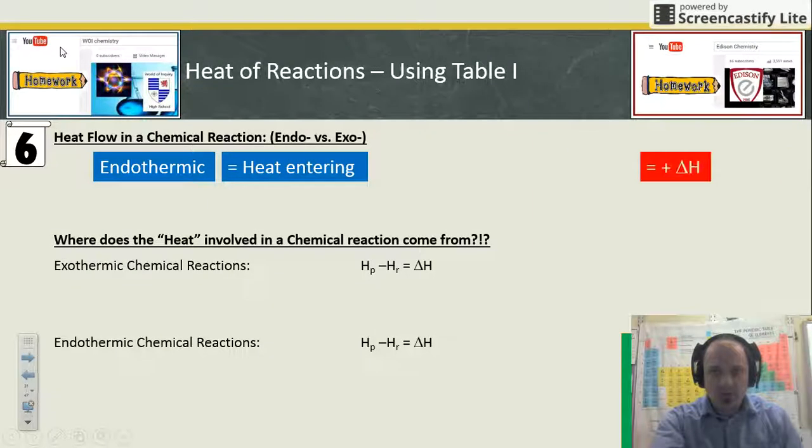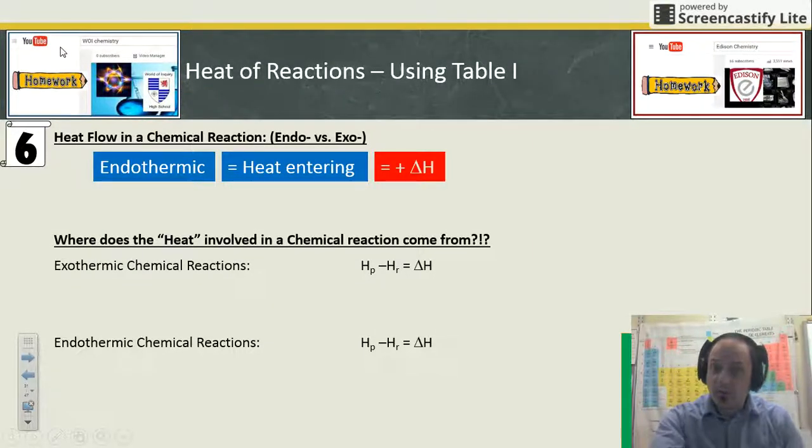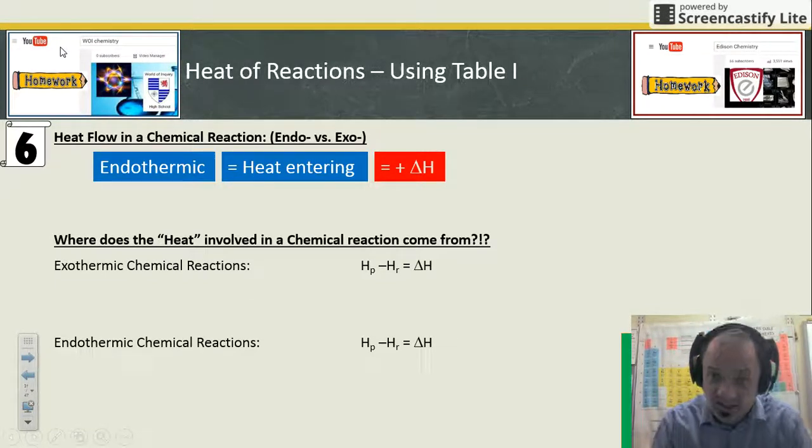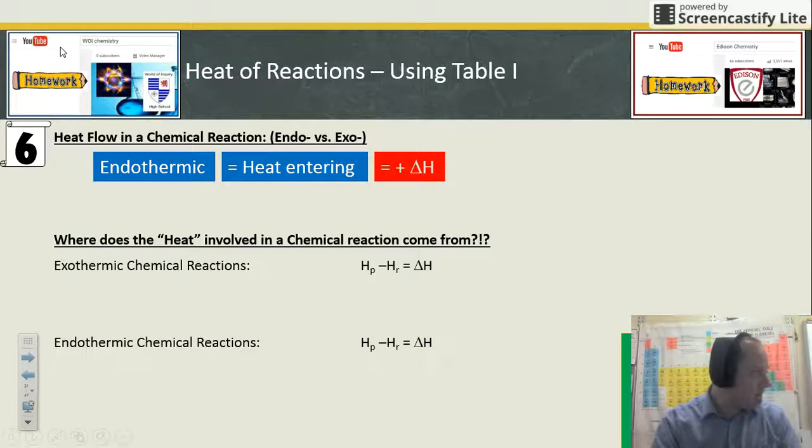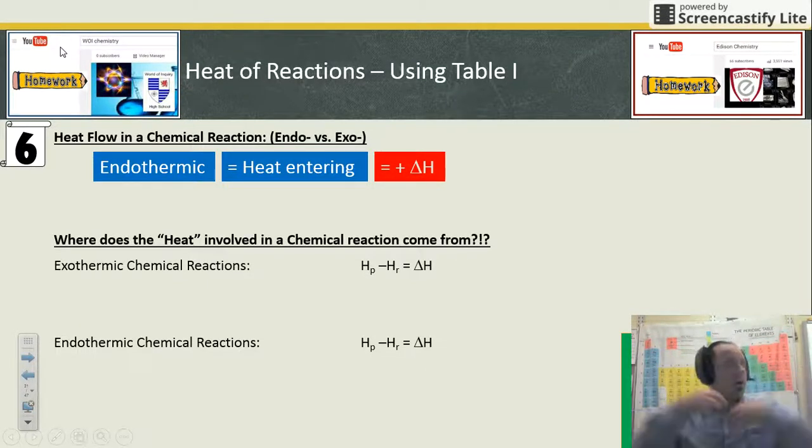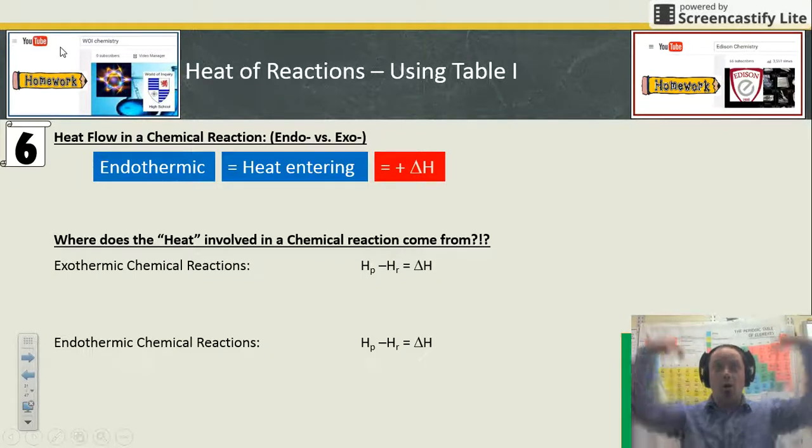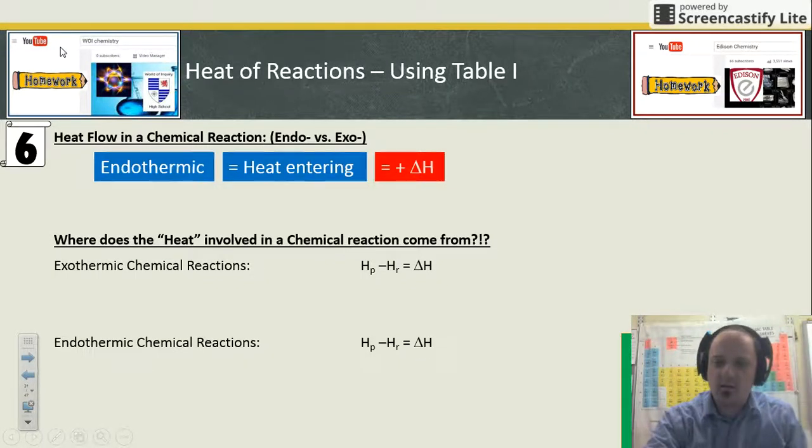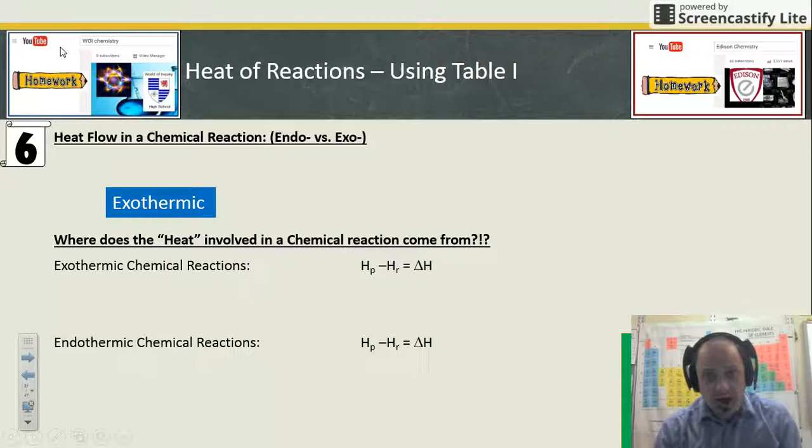Endothermic: heat enters the system, it absorbs and soaks up the heat. Delta H values from table I would be positive. Delta means change, H in this case means heat. The change in heat, delta H, would be increasing if it's absorbing heat from the surrounding areas, so delta H would be positive.